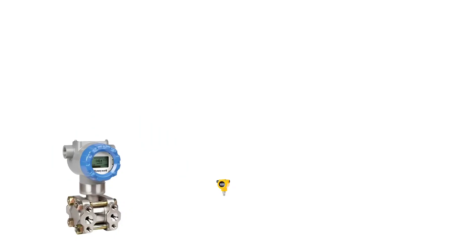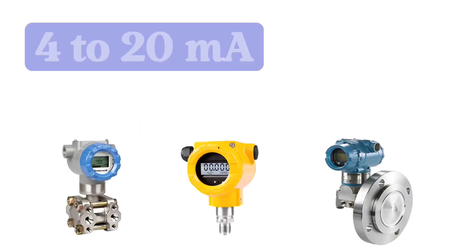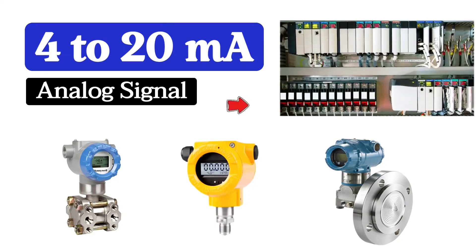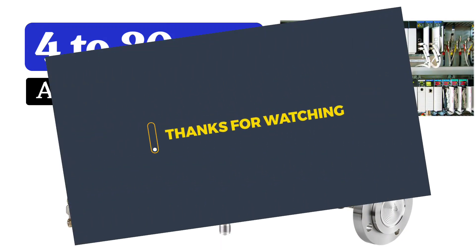So friends, these steps are followed for the pressure transmitter or any other transmitter to read the 4 to 20 milliampere analog signal from PLC. That's all for today. Thanks for watching.